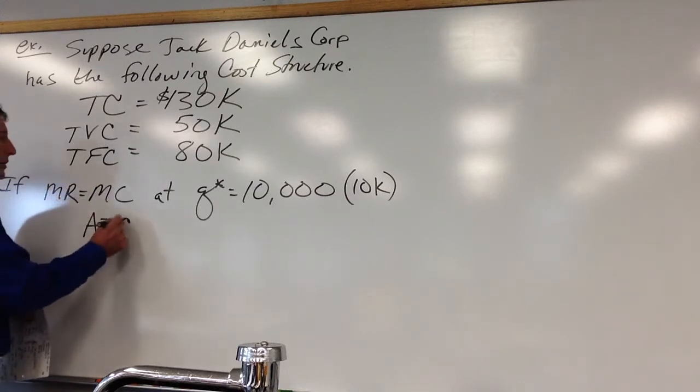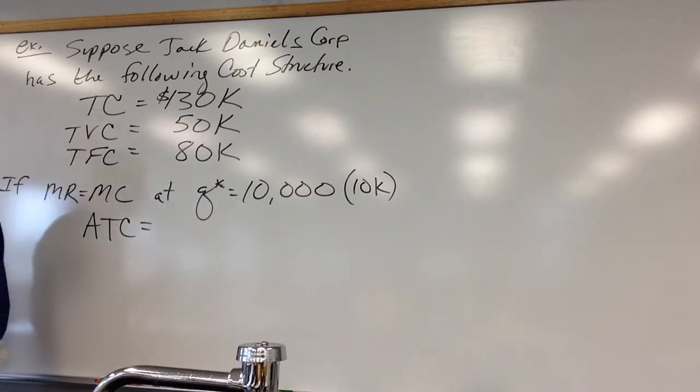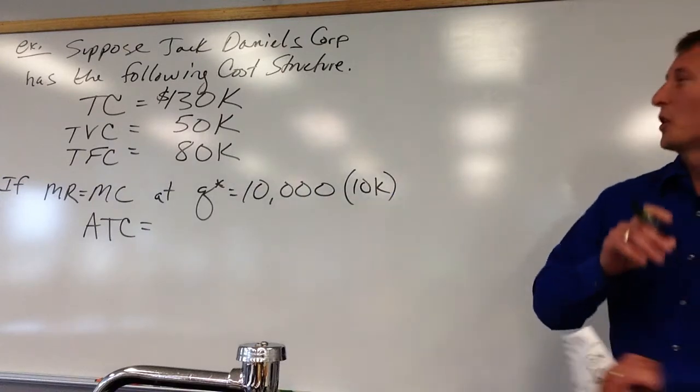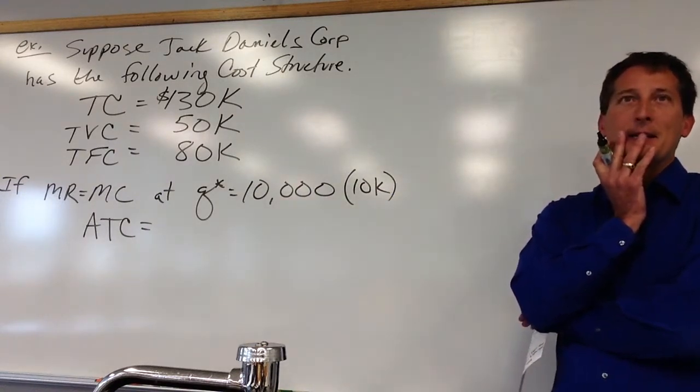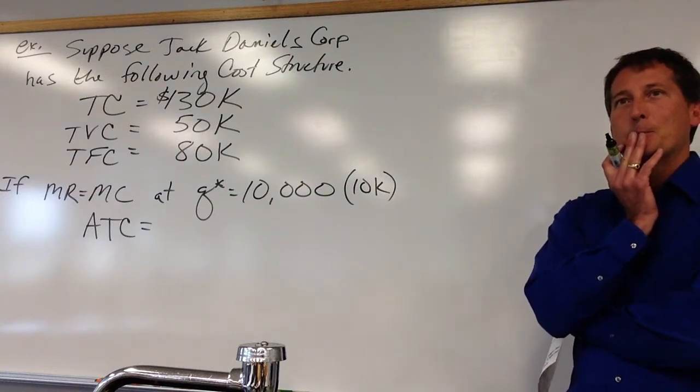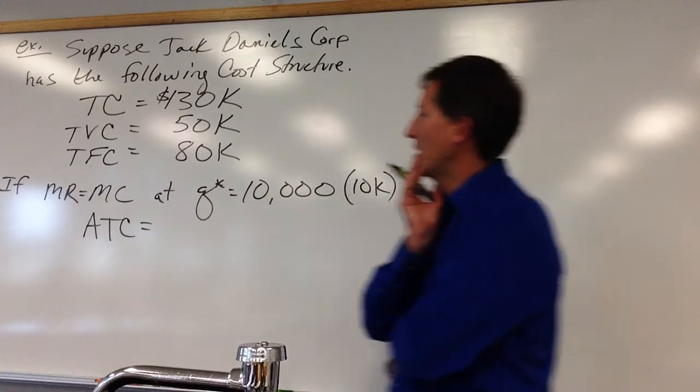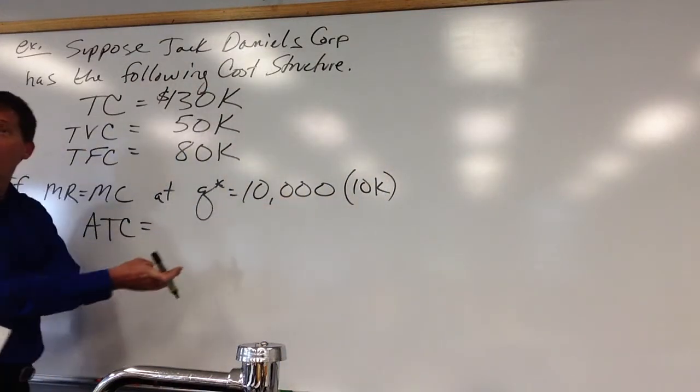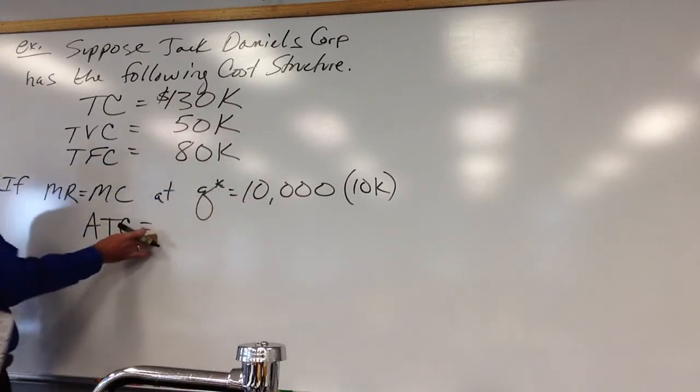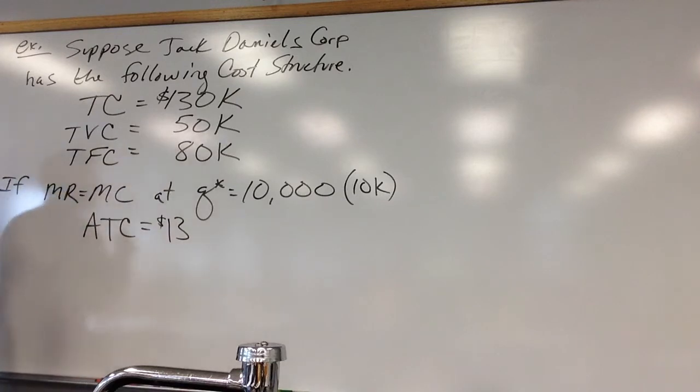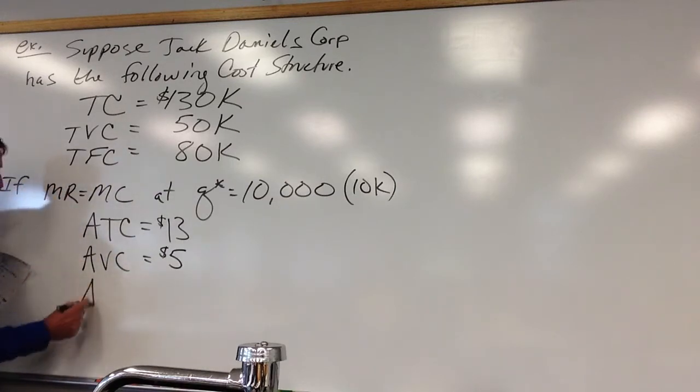What is the average total cost of each bottle? I see some wheels spinning. 13, right? So total cost is $130,000 of kicking out 10,000 bottles. So on average, each bottle is costing me $13. And average variable cost? Five. Not trying to hit you with too many low blows here. Average fixed cost. Eight.